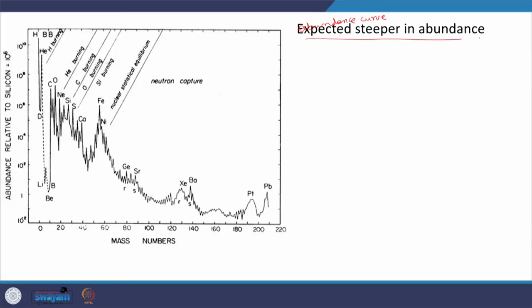Notice the expected steepness in the abundance. Hydrogen, then helium, and then lithium and beryllium are very small in abundance. Carbon and oxygen are above lithium, boron, and beryllium. Then neon, silicon, sulfur, and calcium. The overall trend is a bit steeper.